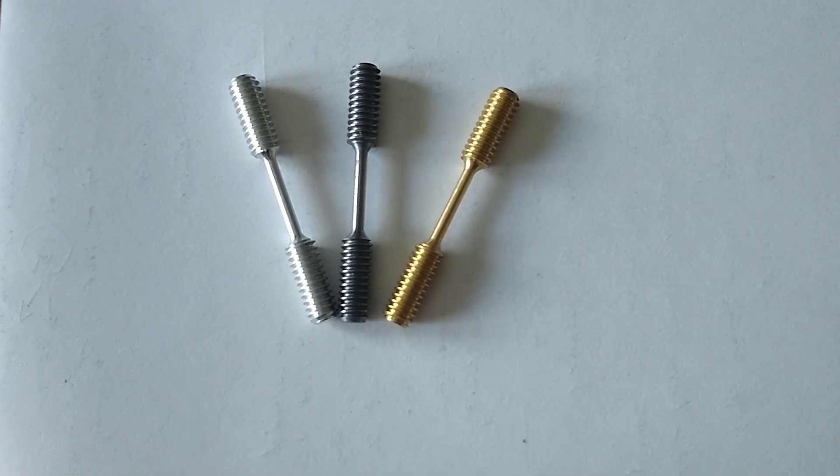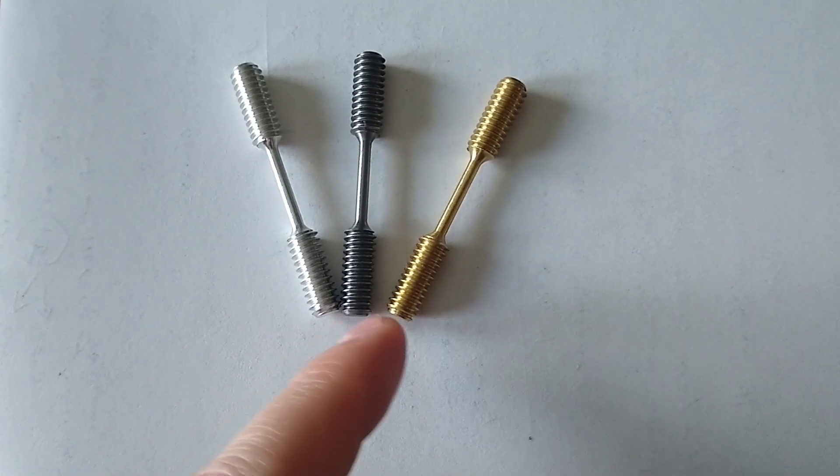These are the dog bones that we're going to be working with. We have aluminum, steel, and brass.